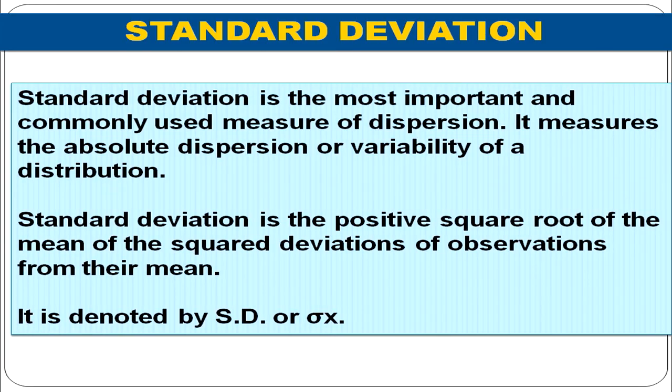Standard deviation is the most important and commonly used measure of dispersion. It measures the absolute dispersion or variability of a distribution. Standard deviation is the positive square root of the mean of the squared deviations of observations from their mean, denoted by S.D. Since standard deviation is calculated from the mean, and mean is based on all observations, standard deviation is the best measure of dispersion.